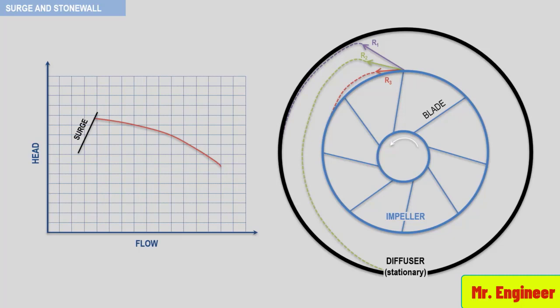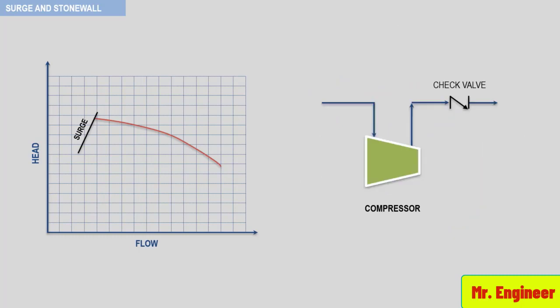Now, take a look at the following simplified process scheme. Once flow separation occurs, the head produced by any dynamic compressor decreases and the process gas present from the compressor discharge flange to the check valve flows backward through the compressor.